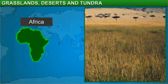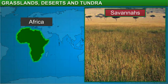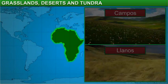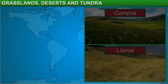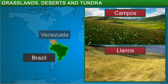Almost half of Africa is covered by tropical grasslands, called the savannahs. Other tropical grasslands are the campos in Brazil and the llanos in Venezuela.